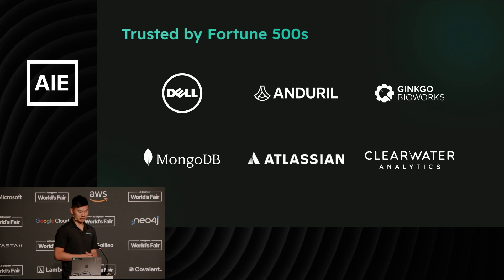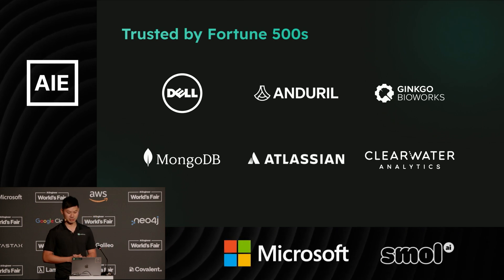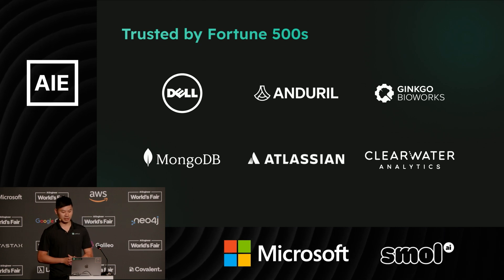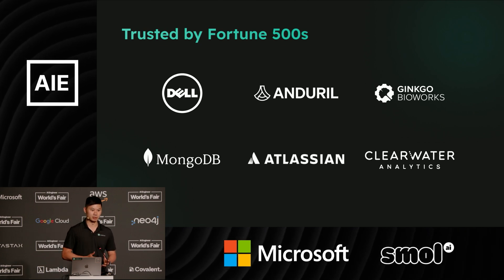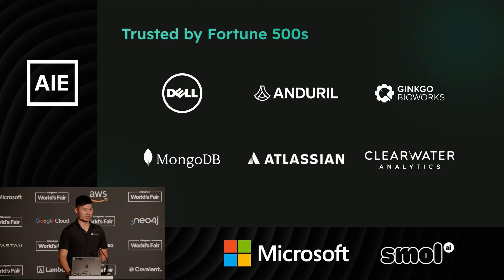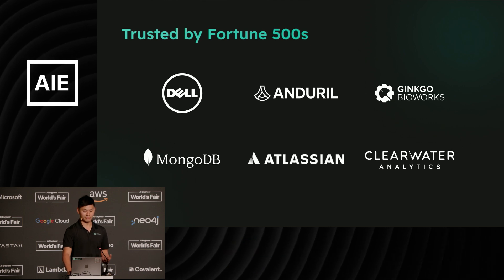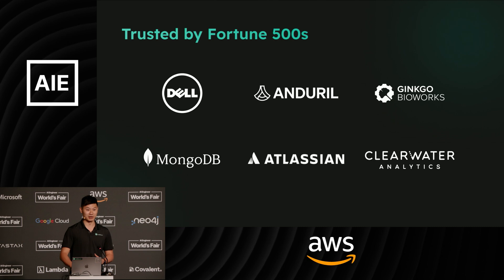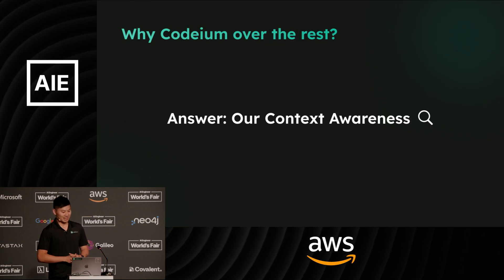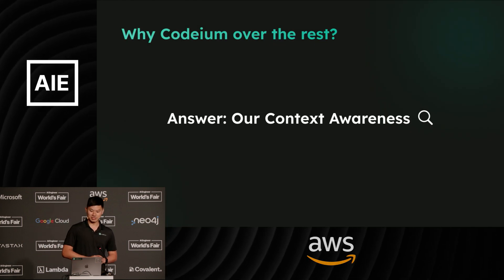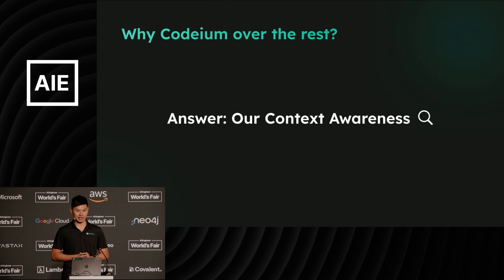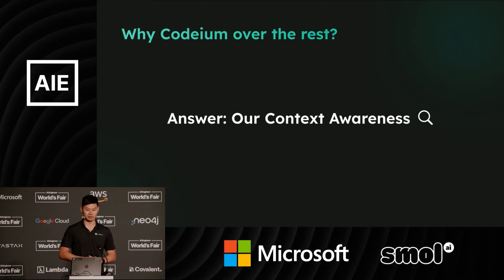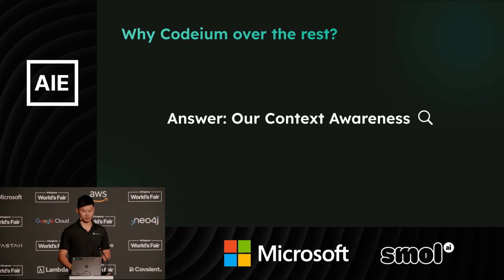We are trusted by Fortune 500s to deliver high-quality code that actually makes it into production, and we do this with top-grade security, licensing, and attribution for some of the largest enterprises on the planet. Our goal at Codium is to empower every developer to have superpowers both inside of the IDE and beyond. Today, I'm going to let you in on some secrets about why users choose us over other AI tools — and the short answer is context awareness.